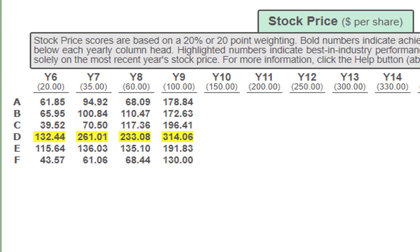Next we have stock price. Company D is best in industry at $314.06, and everyone else met expectations. Keep it up — clearly what you're doing is working. Now you need to figure out how to increase it even further to catch Company D.